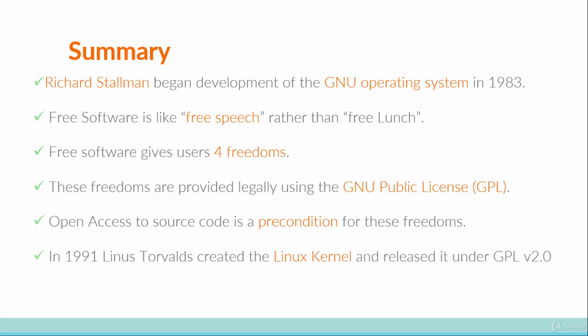In 1991 the GNU project was almost finished but had an important missing piece: the kernel — the part of the operating system that interfaces between the hardware and allocates resources depending on what software requires it. In 1991, Linus Torvalds created his own version of a kernel, called it the Linux kernel, and released it under the GNU Public License version 2, thereby making it free software. So the Linux kernel was the final piece for the GNU operating system. When you download Ubuntu or any other Linux distribution, what you're actually downloading is a version of the GNU plus Linux operating system.